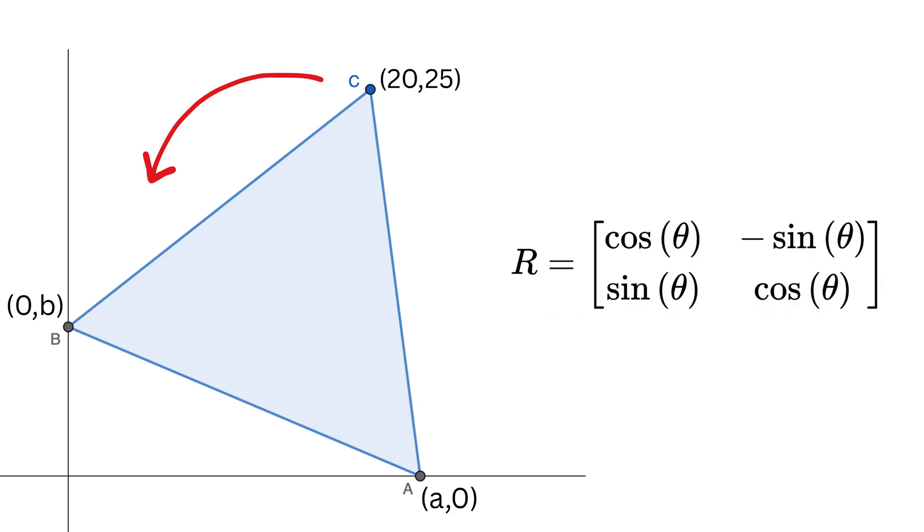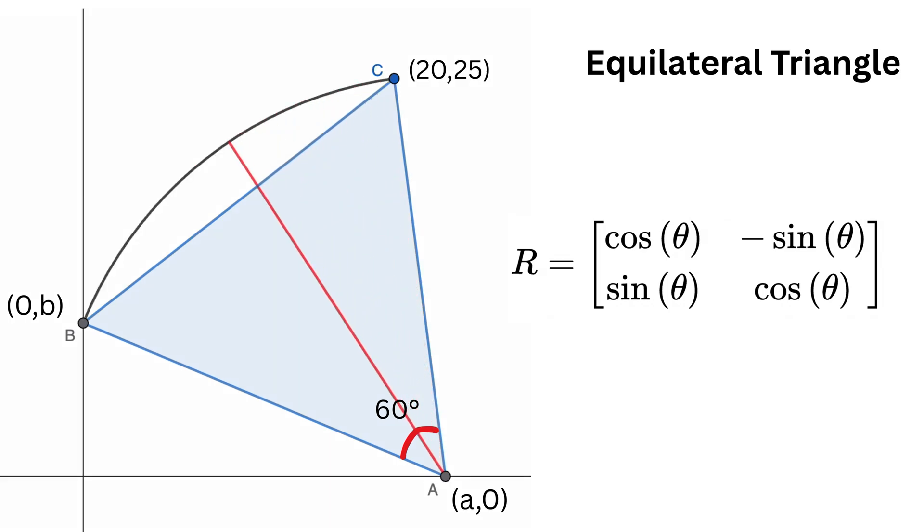The key geometric idea is that in an equilateral triangle, because all the sides and the angles are the same and equal to 60 degrees, rotating one side by 60 degrees maps it onto the next side. See this animation.